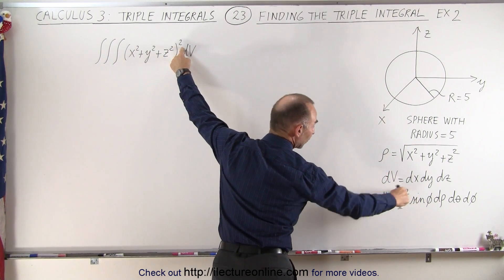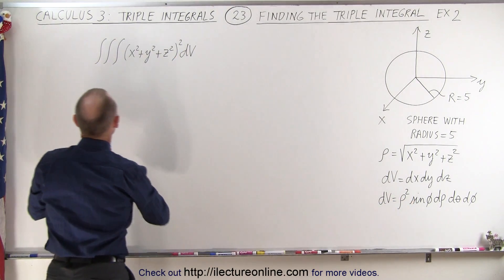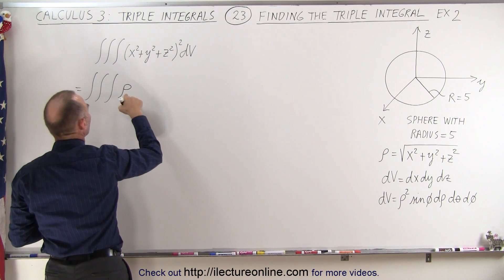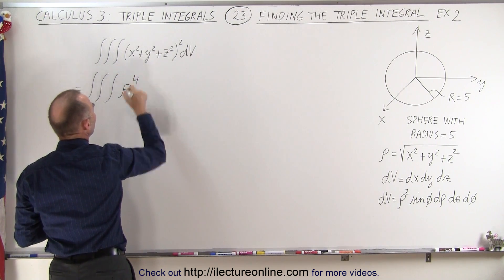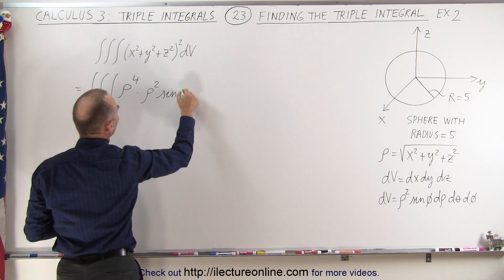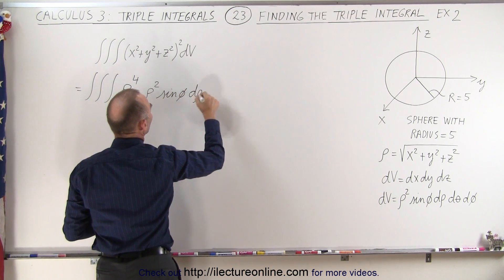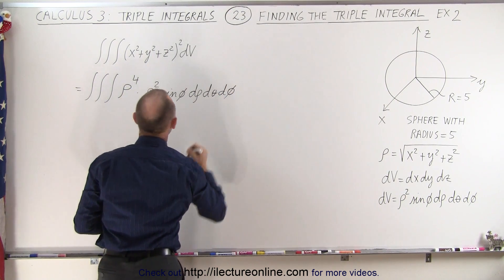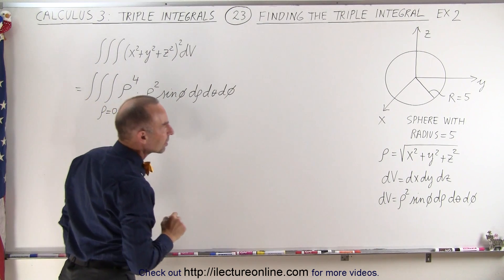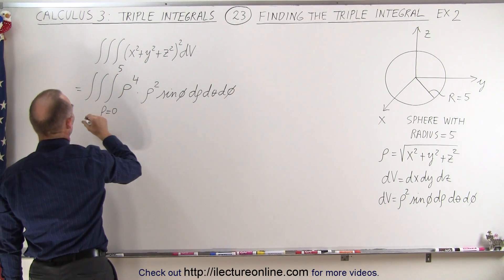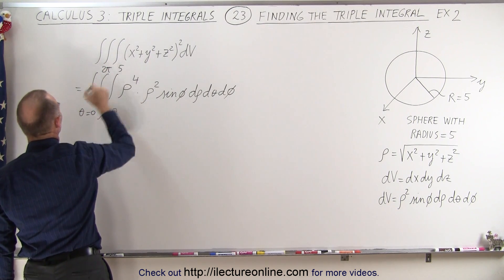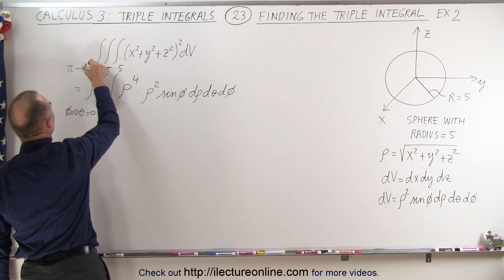So this can be written as rho squared, quantity squared, times the volume element in spherical coordinates. This becomes the triple integral of the radial distance to the fourth power times the volume element, which is rho squared times the sine of phi, d rho d theta d phi. For rho, we integrate from 0 to 5. For theta, we integrate from 0 to 2 pi. And for phi, we integrate from 0 to pi over 2.